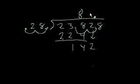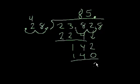So when I went into it 4 times, the remainder was too large. So let me try 5 now. 5 times 8 is 40. And 5 times 2 is 10, plus 4 is 14. 142 minus 140 is 2. Good. 2 is less than 28. This 5 is correct. Now I just bring down the 8.